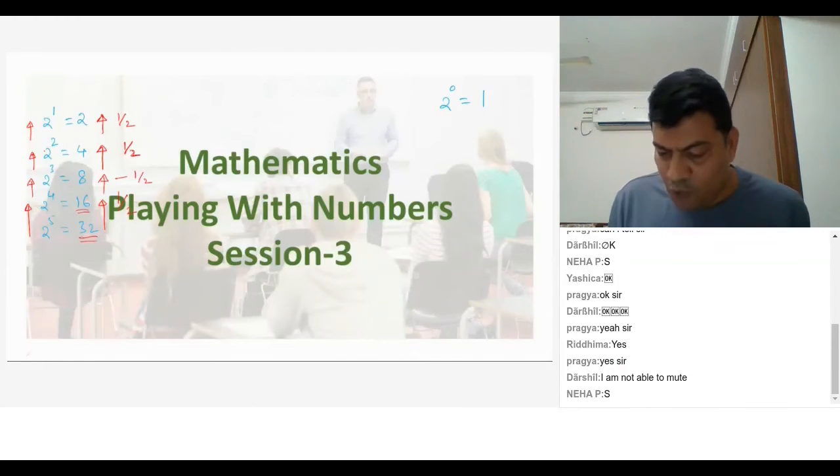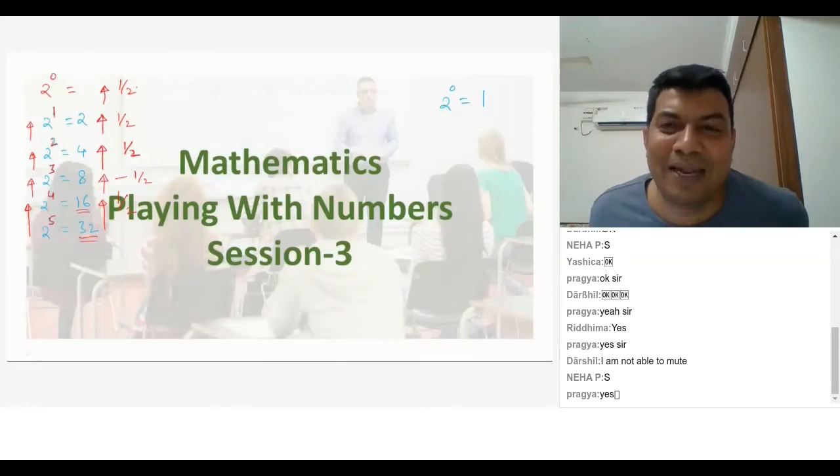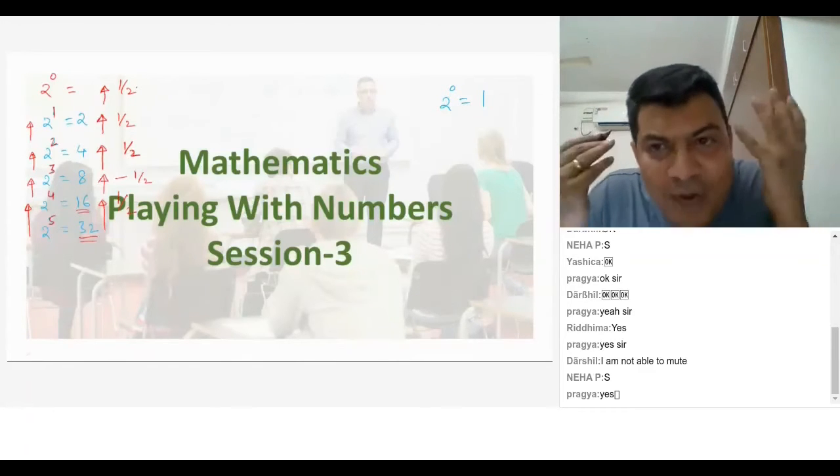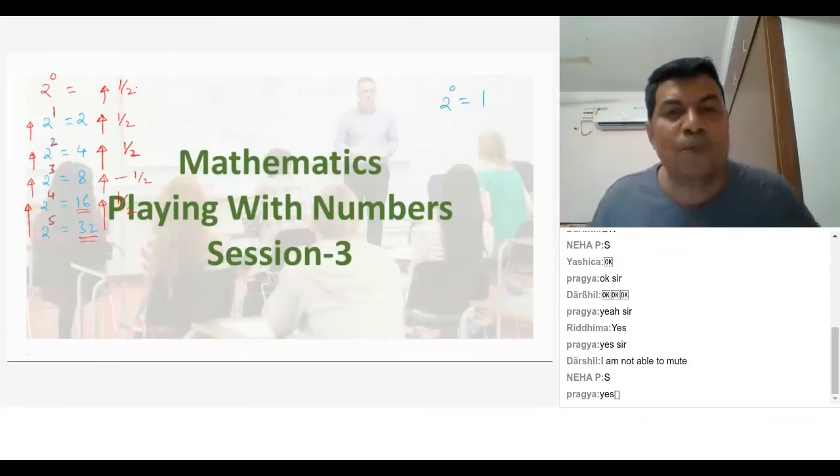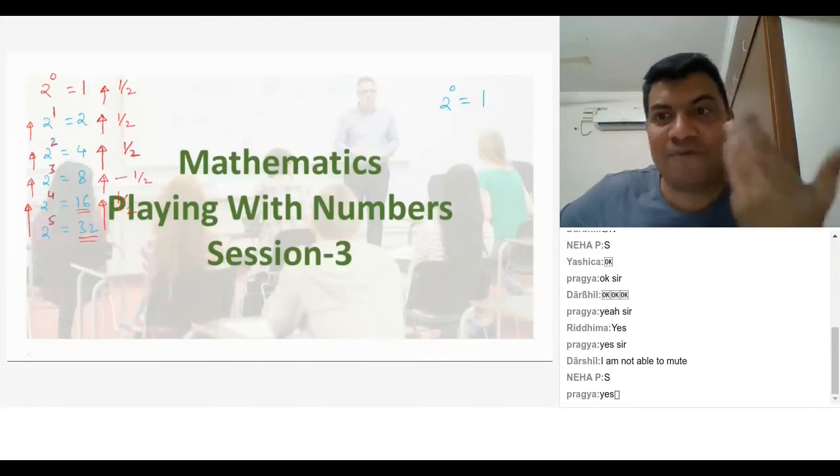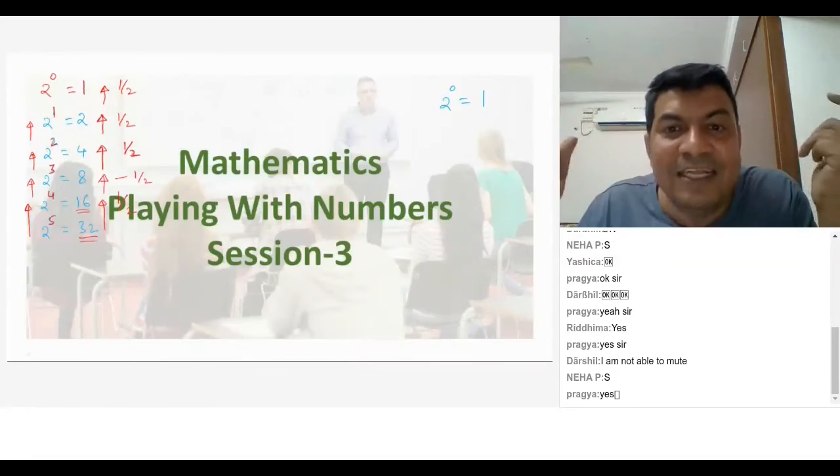Now, if you observe from 2 power 1, if I go to 2 to the power of 0, so if you see the trend from 5 to 4 to 3 to 2 to 1, the same logic should continue. The value should be... I know you want to say, but let me explain to the entire class. It is very important. Get into the logic. 2 power 0, can I say it is equal to 1 now? Yes, sir.